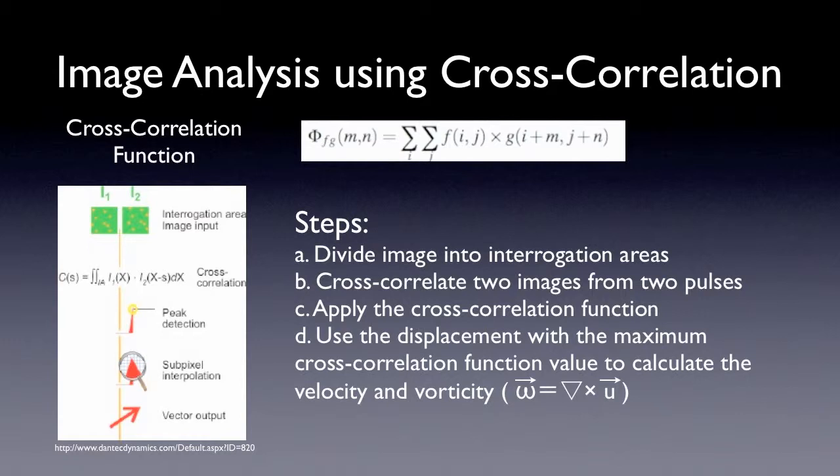The steps of cross-correlation are as follows. First, the image is divided into interrogation areas. Then, the images from two exposures are cross-correlated using the function above. The displacement that has the maximum cross-correlation function value approximates the average displacement. And so we can use the displacement to find velocity and vorticity.